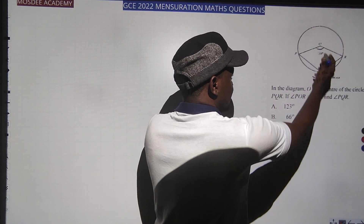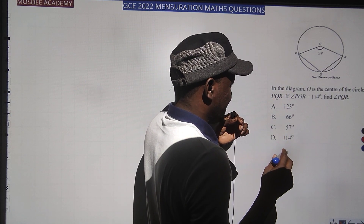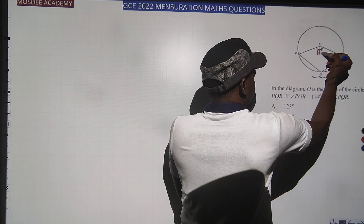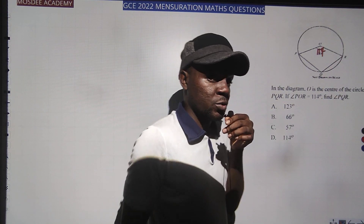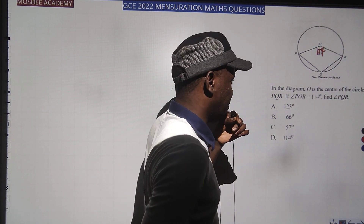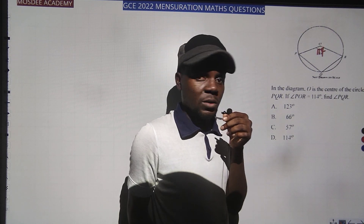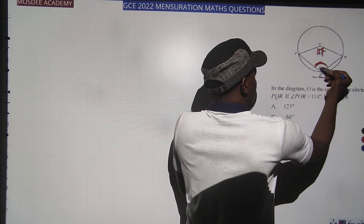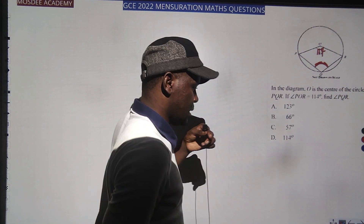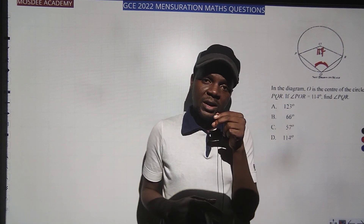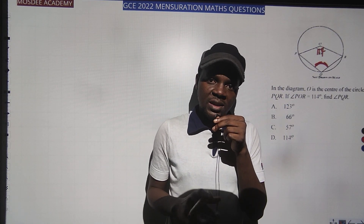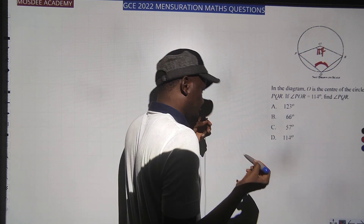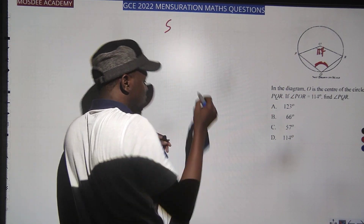O is always the center of this circle. The measure of angle PQR is 114°. Find the measure of angle POR. PQR is the middle angle — that is the circumference angle — so now we apply the same concept. Remember we found the remaining reflex angle just now, so let's do the same thing.